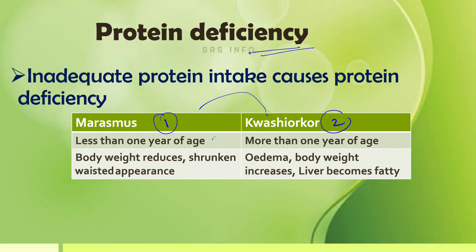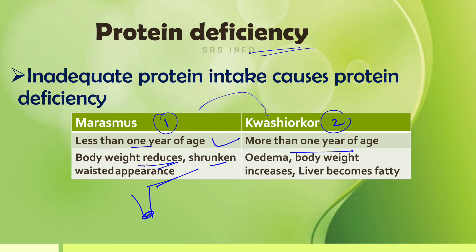Marasmus mainly affects children less than one year of age. It is characterized by reduced body weight and a shrunken, wasted appearance — an absolutely skeletal appearance. This occurs because, due to lack of protein, body building is not taking place.